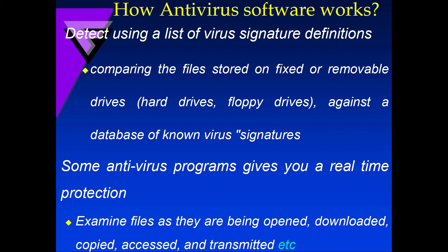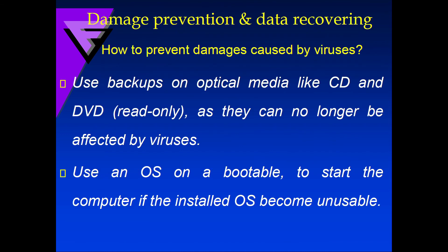How antivirus software works: it detects viruses using a list of virus signature definitions, comparing files stored on fixed or removable drives against a database of known virus signatures. Some antivirus programs offer real-time protection, examining files as they are being opened, downloaded, copied, accessed, or transmitted.